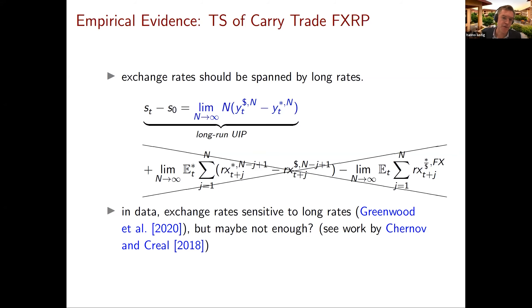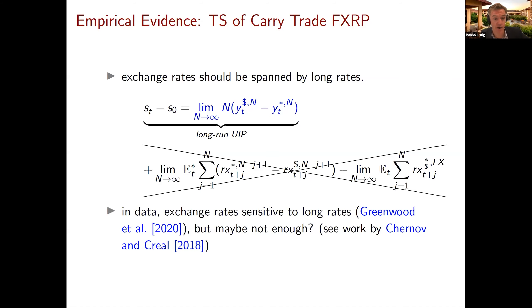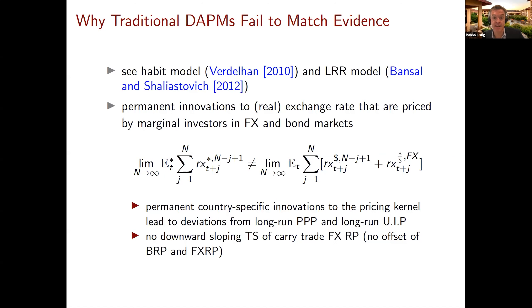This equation says something pretty radical: if you had yields at the really far end of the yield curve, they should sort of totally span exchange rates. If you ran a regression of changes in exchange rates on changes in very long-term yields, you should explain all the variation. That's not quite true — there's a recent paper by Mike Chernov and Drew Creal showing that R-squares are probably on the low end. But bear in mind that if you believe in PPP and long-run UIP, then long rates should really explain a lot of the variation in exchange rates.